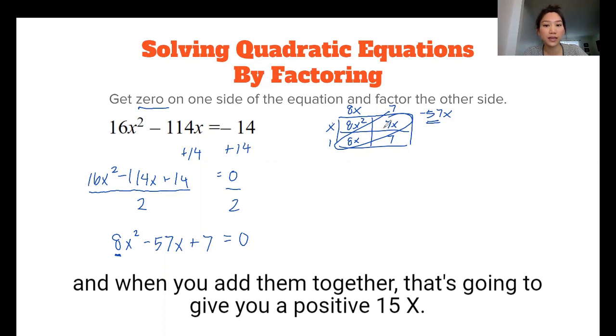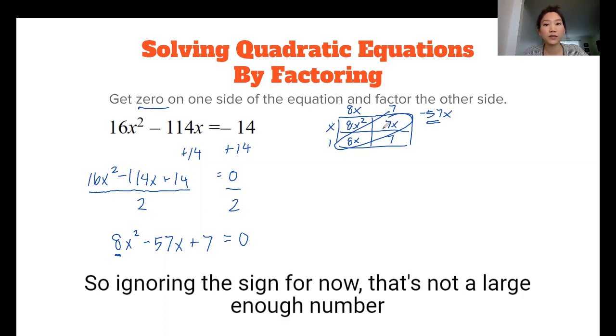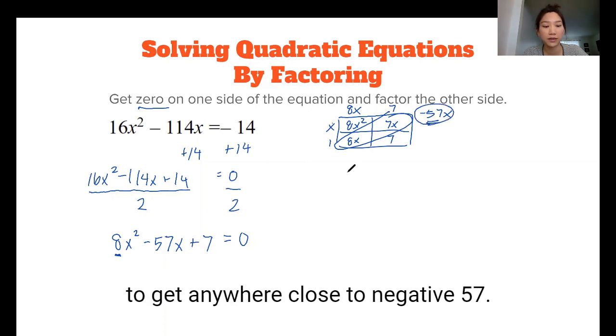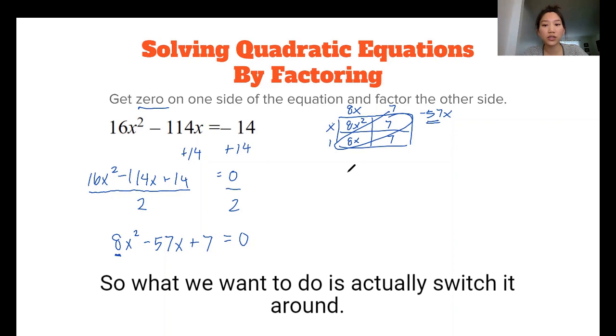And when you add them together, that's going to give you a positive 15x. So ignoring the sign for now, that's not a large enough number to get anywhere close to negative 57. So what we want to do is actually switch it around.